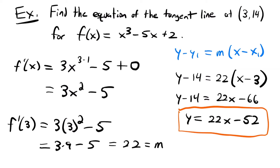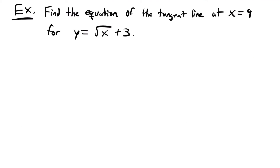The process is: take the derivative of our function, plug in the x value of the point to get the slope at that point, and then use that slope and the given point to find our tangent line. Let's look at another example. We're asked to find the equation of the tangent line at the point x equals 9 for the function y equals the square root of x plus 3. This one's a bit different because we're only given an x value and not an entire point, so we'll need to do extra work to find the y value.